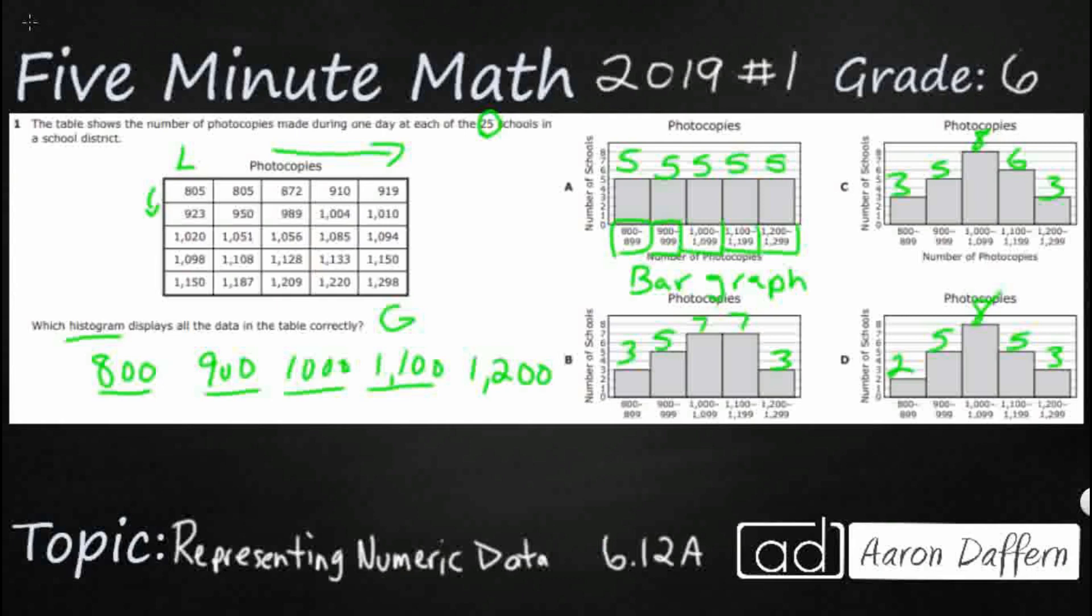In my 800 to 899 range, I've got 1, 2, 3. We don't want to completely mark them out because we want to be able to read what's underneath them in case we make a mistake or we need to go back. In my 900 to 999 range, I've got 1, 2, 3, 4, 5. This is why I said it was really nice that they order these for you because if not, you'd have to go all over this table and sometimes we miss stuff.